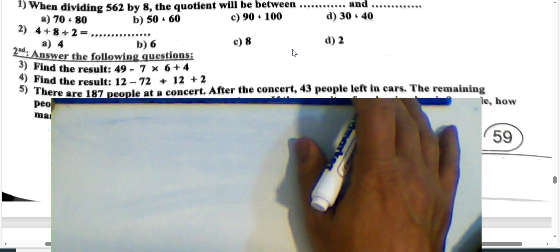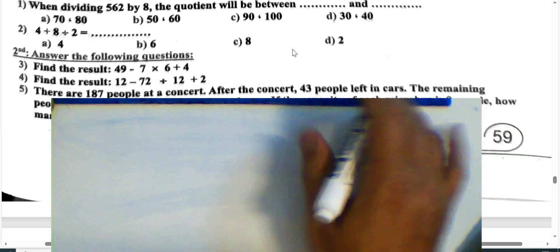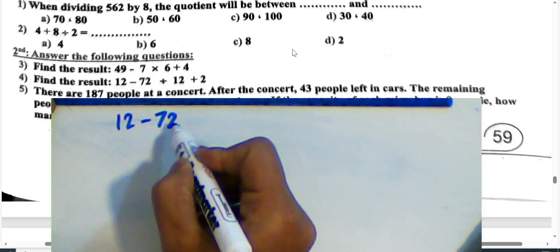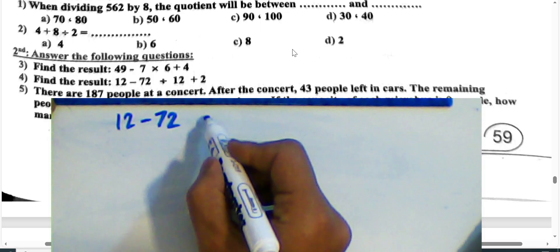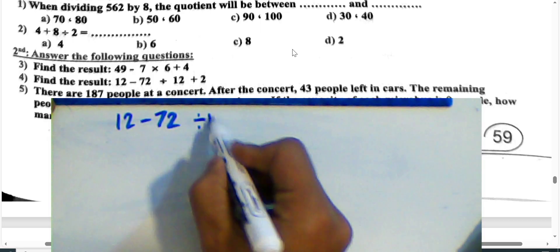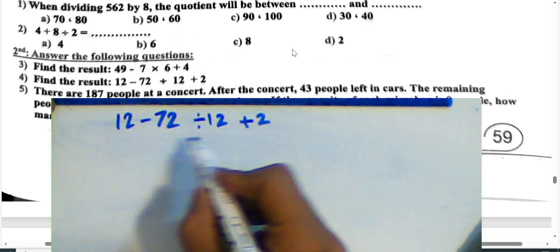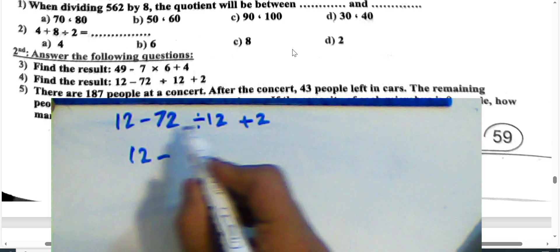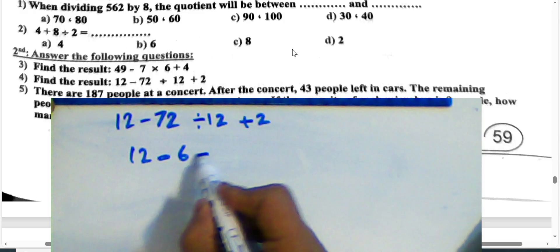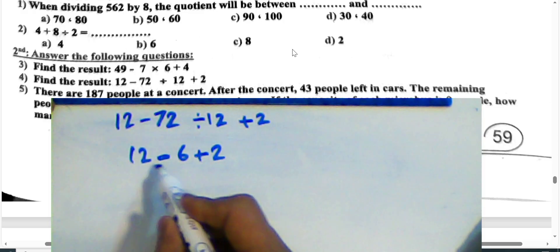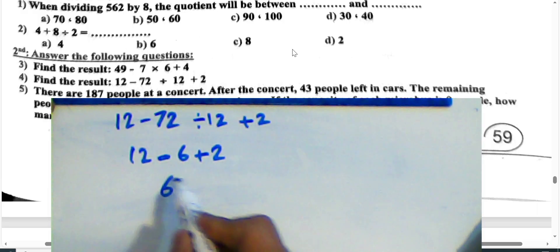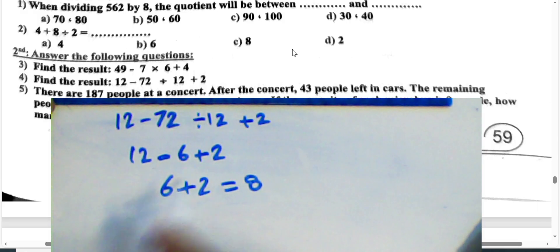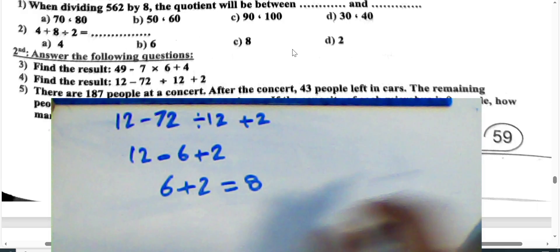Next question: Find the result of 12 minus 72 divided by 12 plus 2. Division first: 72 divided by 12 equals 6. Then 12 minus 6 equals 6, and 6 plus 2 equals 8. The answer is 8.